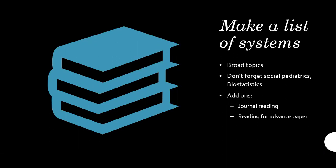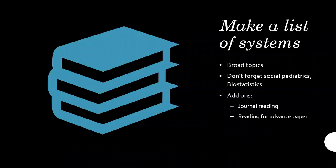First, you need to know the content that you need to prepare. Make a list of all the systems present in your textbook — whichever textbook you are following, it does not matter. Just broad topics: cardiovascular system, respiratory system, CNS. Don't forget to add extra topics like social pediatrics and biostatistics. Also include critical care pediatrics and neonatology, because we usually tend to read those from a different book.